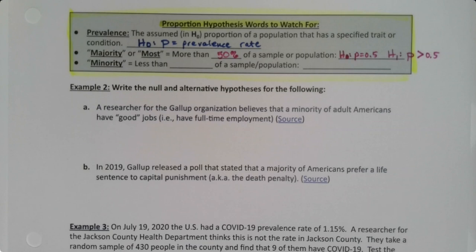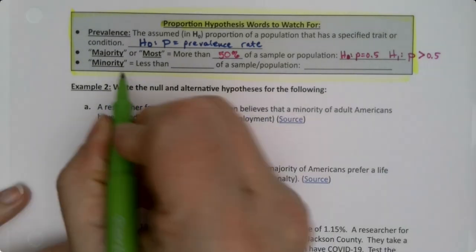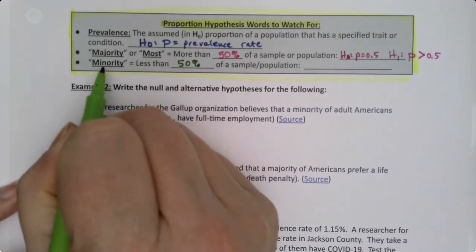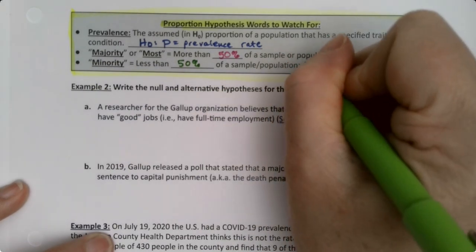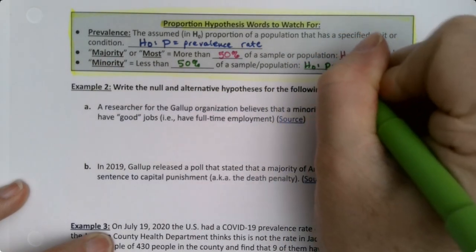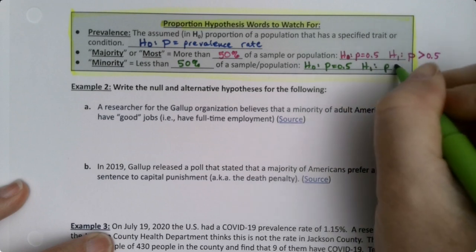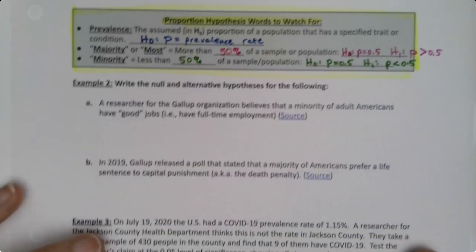By the same token, the word minority can give you your null and alternative because a minority is less than 50%. If you see the word minority in a problem, it means your H0 is P equals 0.5, but your alternative is P is less than 0.5.